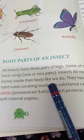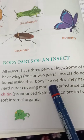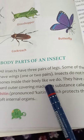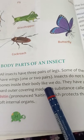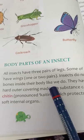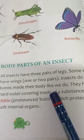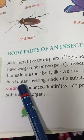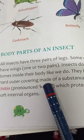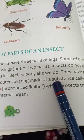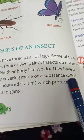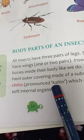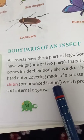Like we have bones, animals have bones, birds have bones — but insects do not have bones. Instead, they have a hard outer covering made of a substance called chitin.